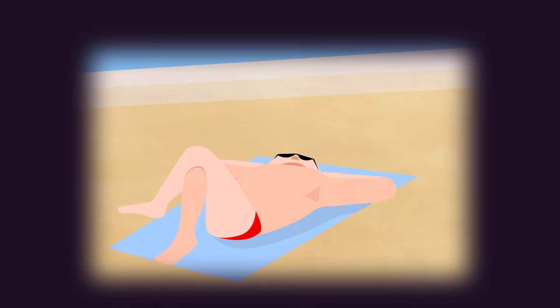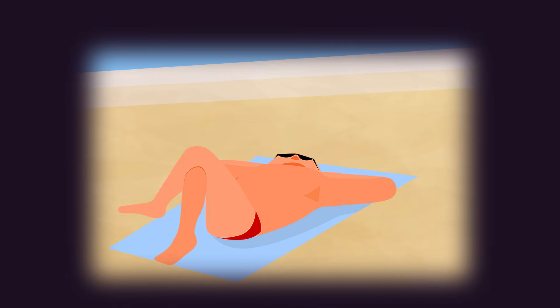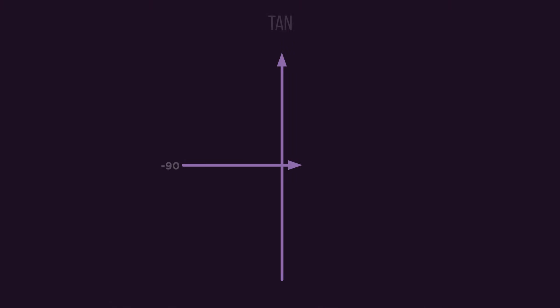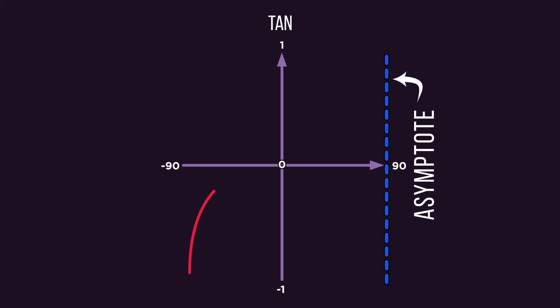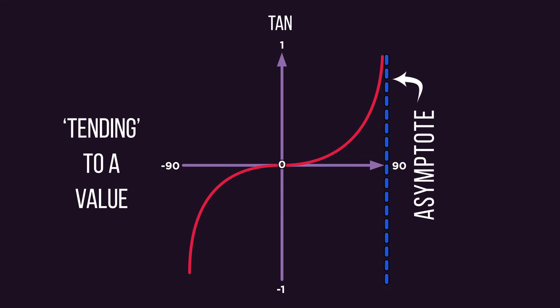Another example is tan. The tan graph looks like this. At 90 degrees, we call the answer undefined. The graph gets closer and closer, but never actually touches 90 degrees. We call this trending to a value. The graph approaches an asymptote.